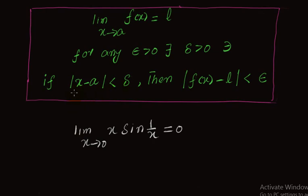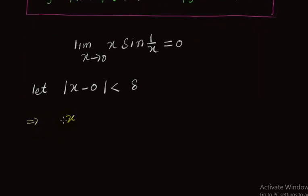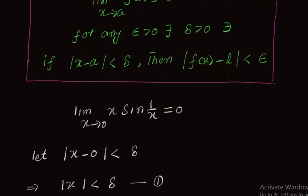In each question we start with the relation |x - a| < delta and try to find a relation between delta and epsilon. Let |x - 0| < delta, which implies |x| < delta. This is our Equation 1.